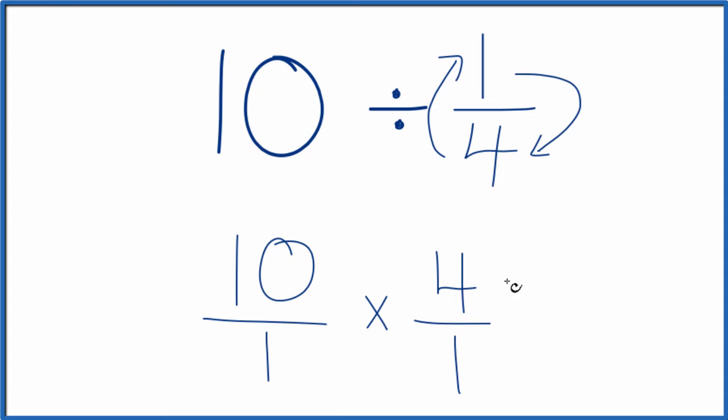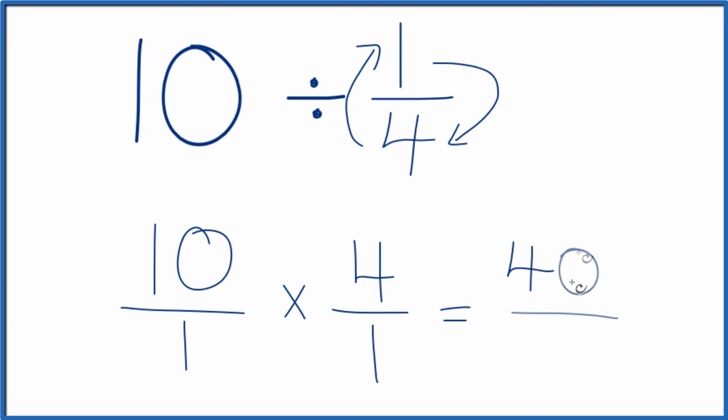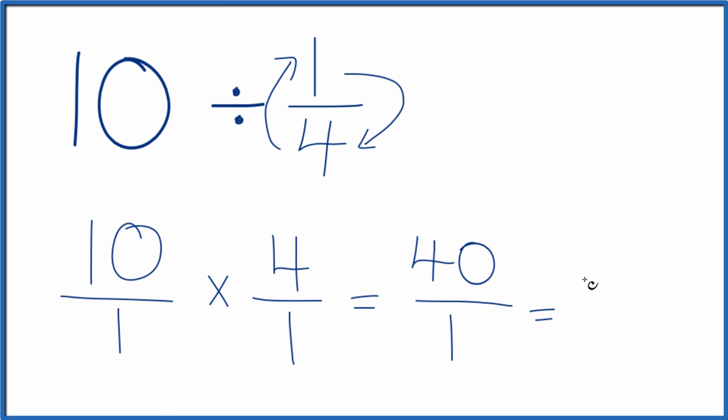And now when we're multiplying fractions, we just multiply the numerators and then the denominators. That gives us our fraction. 10 times 4, that's 40. 1 times 1, that's 1. And if you divide 40 by 1, you get 40.